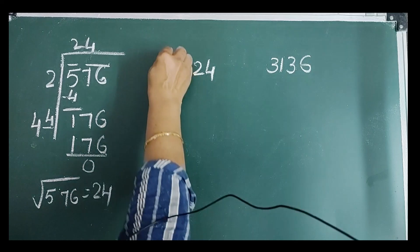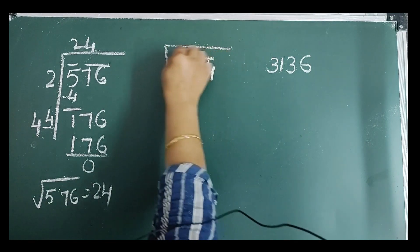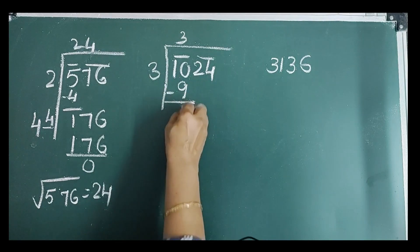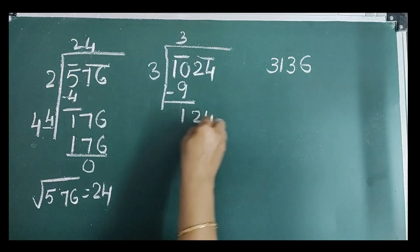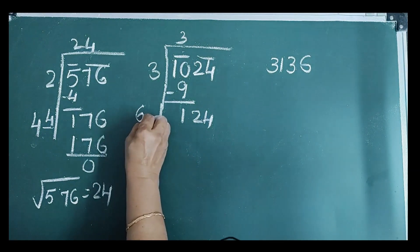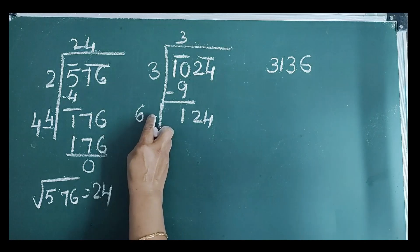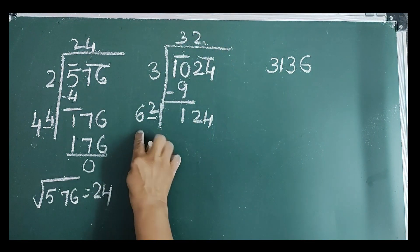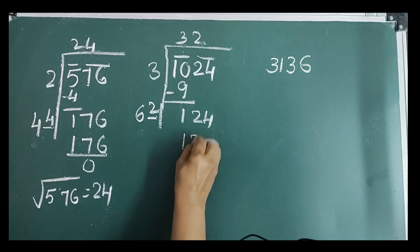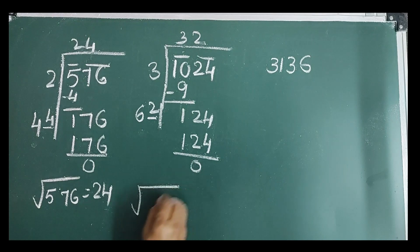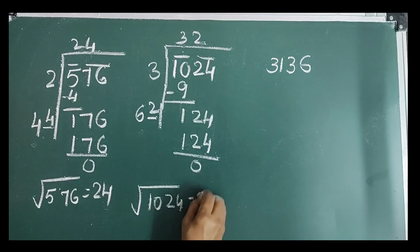Next number is 1,024. 3 times 3 is 9, remainder 1. Bring down next bar 24, new dividend is 124. Double the quotient to get 6 with a blank. Guess digit 2, quotient also 2. 2 multiplied by 62 gives 124, remainder 0. Therefore, square root of 1,024 is equal to 32.